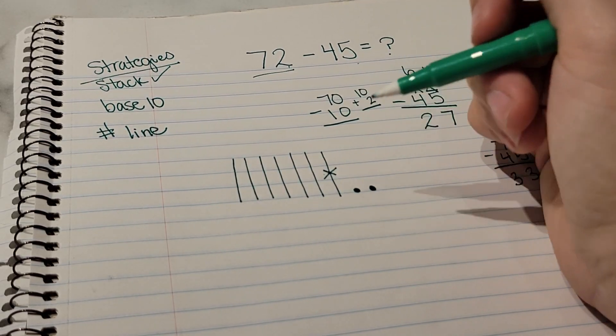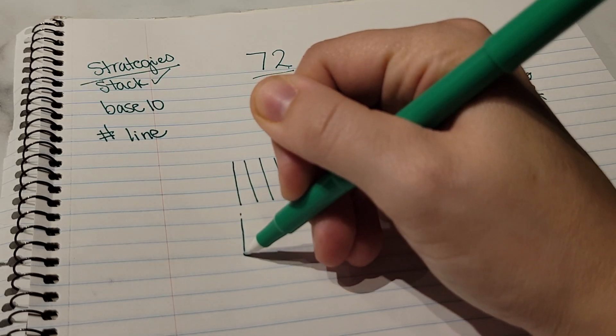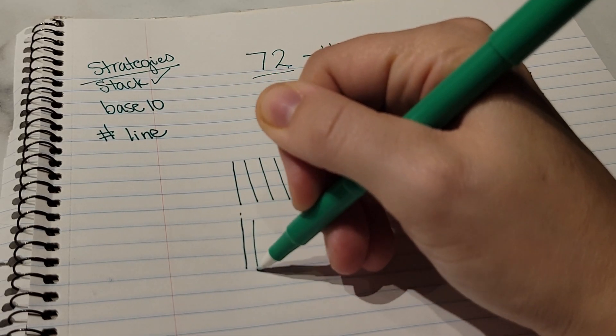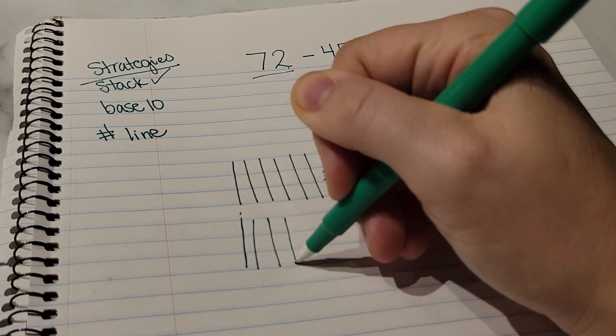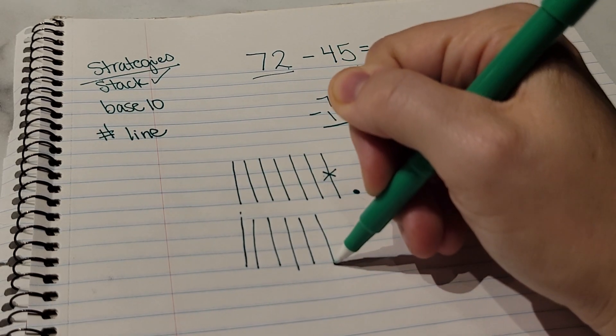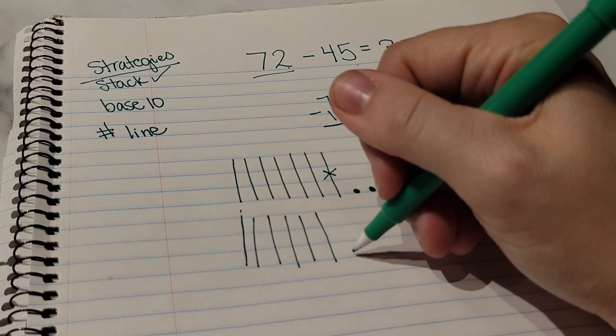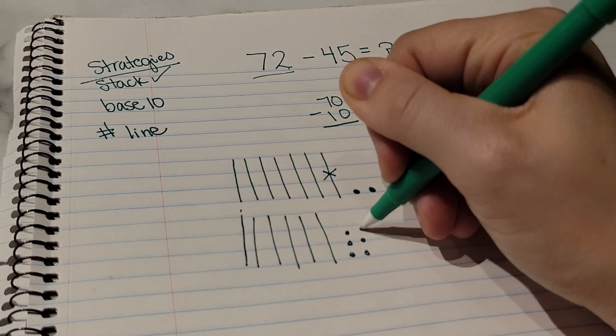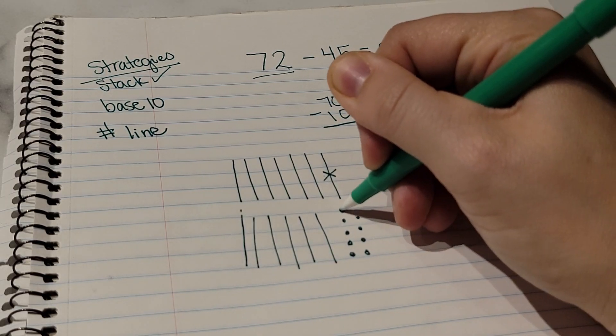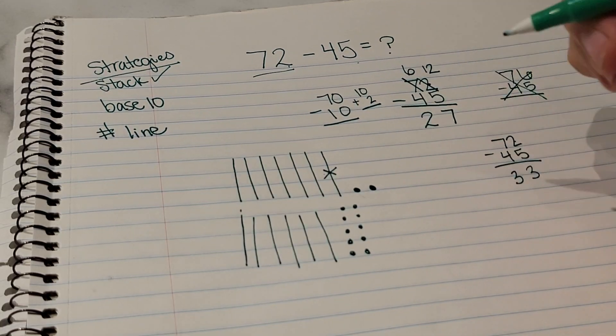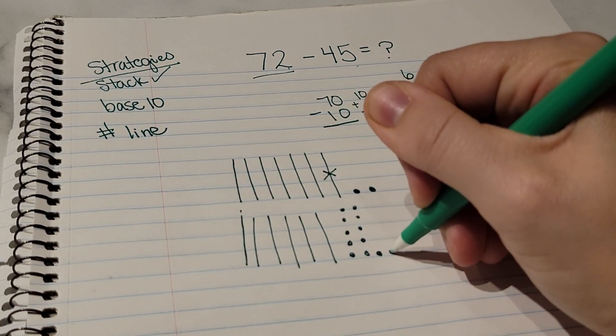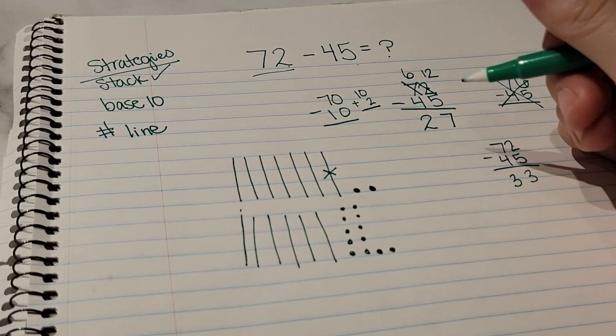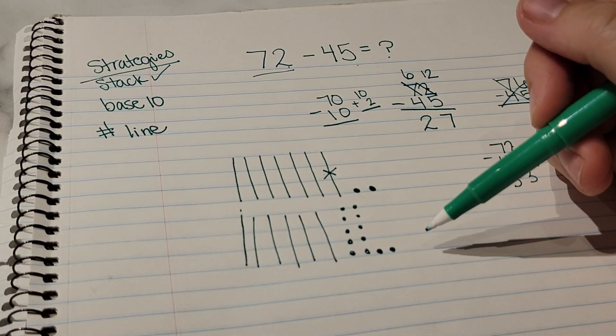So I go ahead and cross this 10 off to remind me. I am making that into 10 single ones: 3, 4, 5, 6, then my seventh one - remember, is my exchange for the tens.